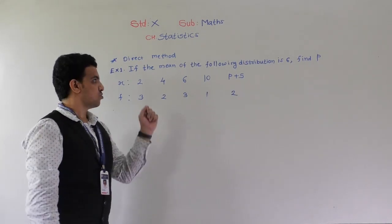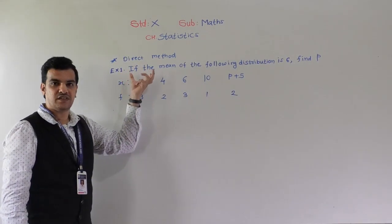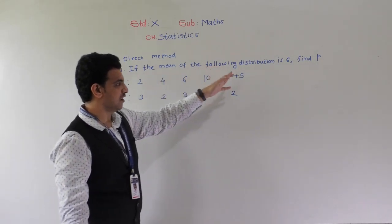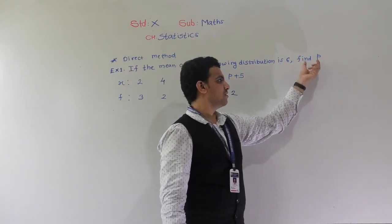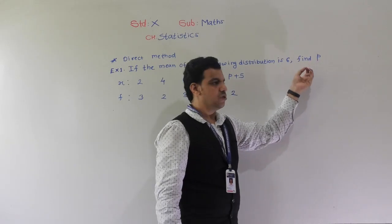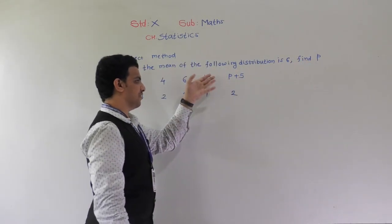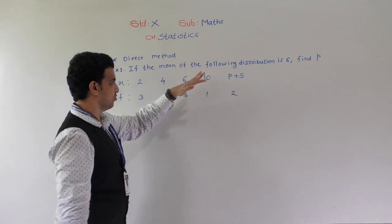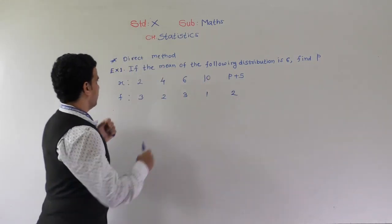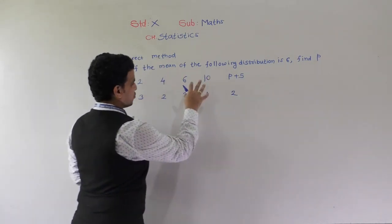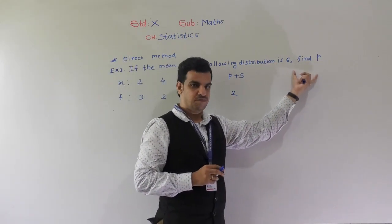Hello students. Now we are going to solve examples when mean is given and we have to find the unknown value of p. Here p is unknown, so we have to find the value of p. In the example, they can give x or t, so we have to find the value of p. Here the mean of this distribution is given as 6 and we have to find the value of p.